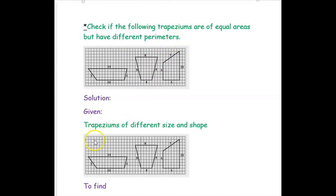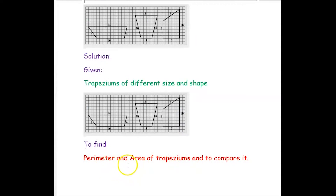So, let's see what is given and what to find first. There are three given trapeziums, each of different shape and size. We want to find the perimeter and area of all three trapeziums and compare them.